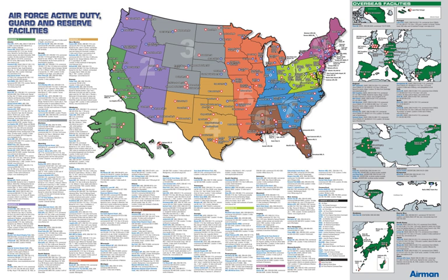Qatar: Doha International Airport. United Arab Emirates: Al-Ain International Airport, Al-Ain, closed 1991; Al-Dhafra Air Base, Abu Dhabi; Al-Minhad Air Base, Dubai, closed 1991; Sharjah International Airport, Sharjah, United Arab Emirates. Central Asia: former Soviet Air Forces bases.